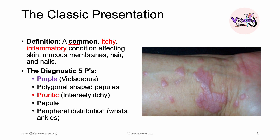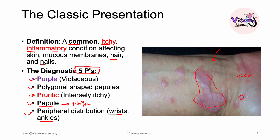Lichen planus is a common itchy inflammatory condition affecting the skin, the mucosa, hair, and nails. The diagnostic five Ps that you want to keep in mind are: purple, polygonal, pruritic papules — and these papules sometimes coalesce or grow bigger and form plaques. Peripheral, meaning that they are found on the wrists and ankles. As you can see here, papules are less than one centimeter, while a plaque is bigger than one centimeter, and they are very itchy and polygonal.